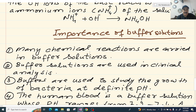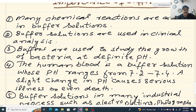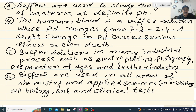The importance and applications of buffer solutions are: number one, many chemical reactions are carried out in buffer solution; number two, buffer solutions are used in clinical analysis; number three, buffers are used to study the growth of bacteria at a definite pH; number four, human blood is a buffer solution whose pH ranges from 7.2 to 7.4 — a slight change in pH causes serious illness or even death; number five, buffer solutions are used in many industrial processes such as electroplating, photography, preparation of dyes, and leather industry; number six, buffers are used in all areas of chemistry and applied sciences such as microbiology, soil science, and clinical tests.